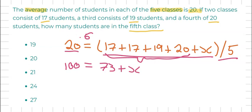So now we're going to move the 73 over to the other side. So 100 minus 73 equals 27.